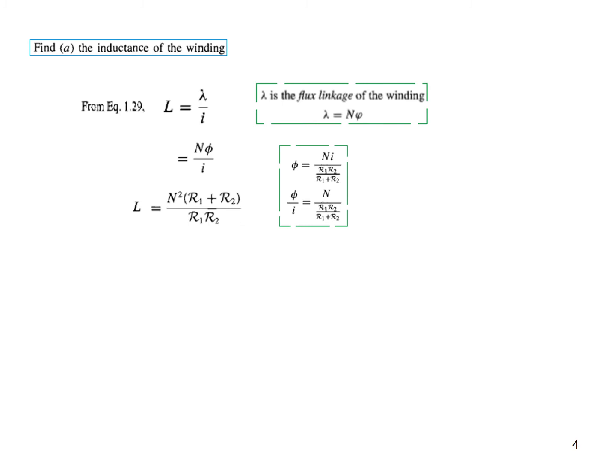And so for L, now we can write this: N and there is an N from here, so N squared. This term goes up, so (R1 + R2) divided by (R1 * R2). And we can further simplify, so it can be written like this, dividing both by R1*R2.